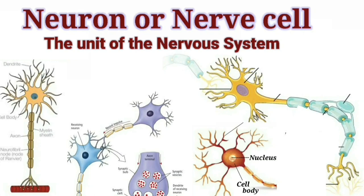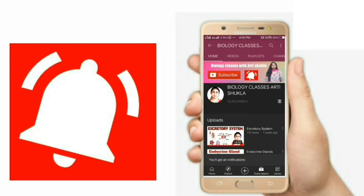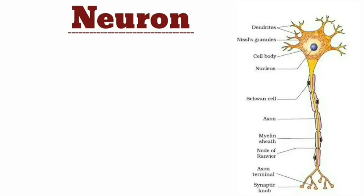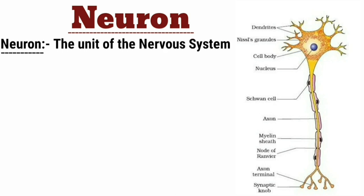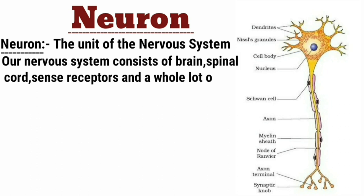Students, now I am going to discuss about the Neuron or Nerve Cell. In this video, we will be discussing about the nervous system, the structure of the neuron and its function, and about the synapse in detail. The neuron or nerve cell is the unit of the nervous system. Our nervous system consists of the brain, spinal cord, sense receptors, and a number of nerves.